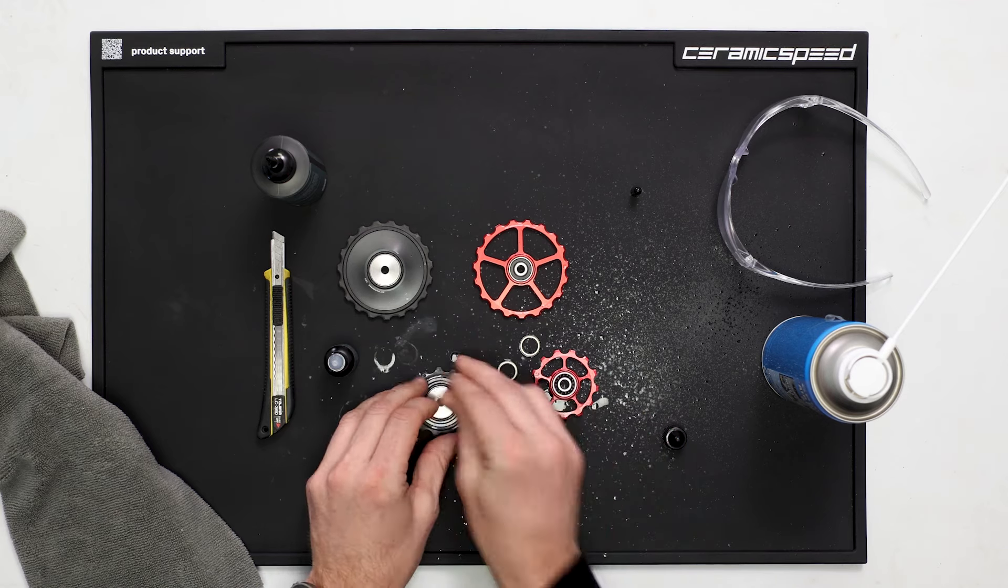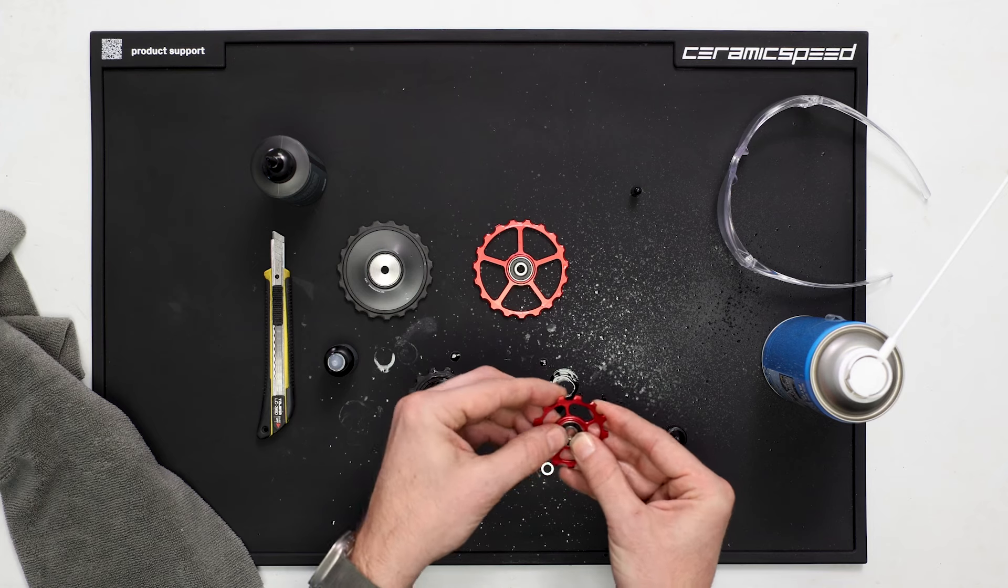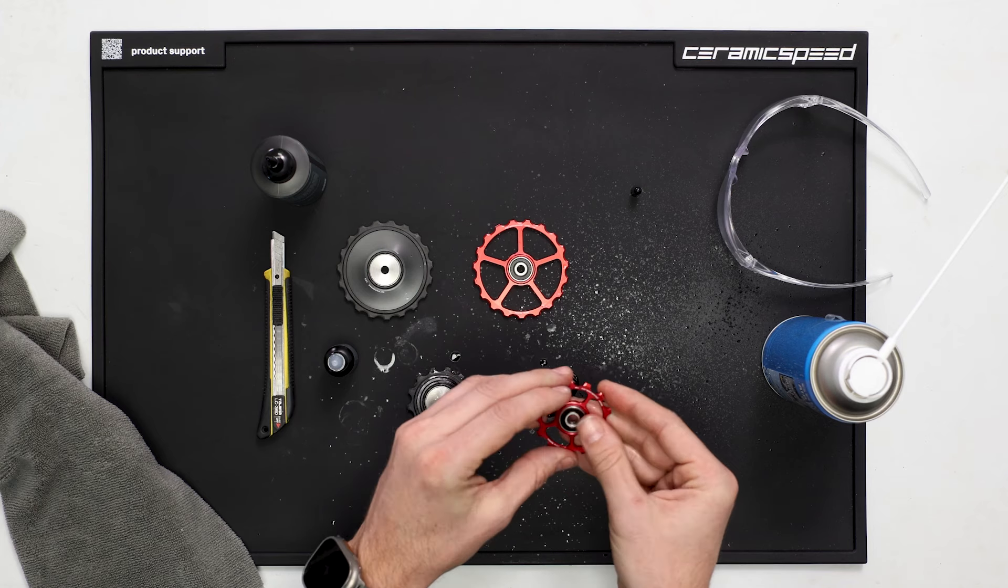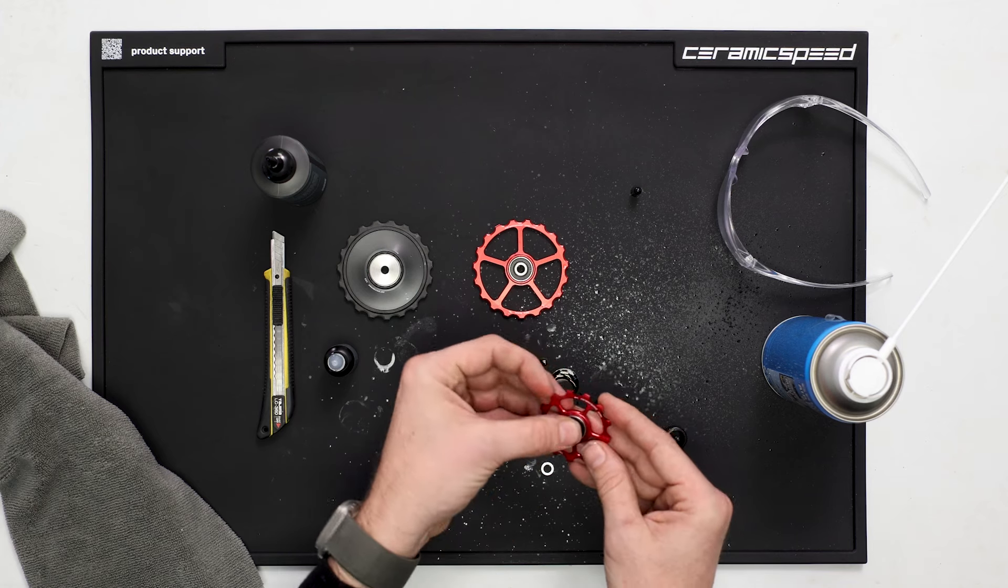Once our seals are lifted and out of the way, we'll go ahead and apply a few drops of UFO bearing cleaner into the bearings. We'll rotate, agitate, and let that sit.